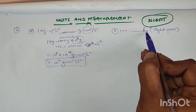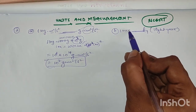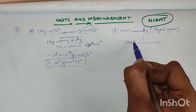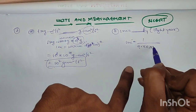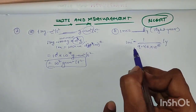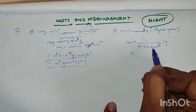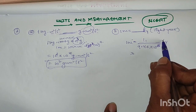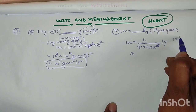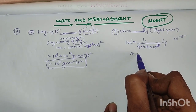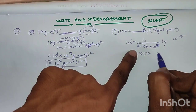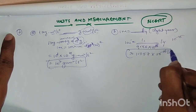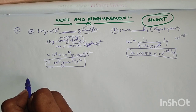Next question: 1 meter equals how many light-years? Here, 1 meter equals 1 divided by 9.46 into 10 to the power of 15 light-years. Simplifying, 10 to the power of 15 taken to the numerator becomes 10 to the power of minus 15, giving 1 by 9.46, that is 1.057 into 10 to the power of minus 16 light-years.